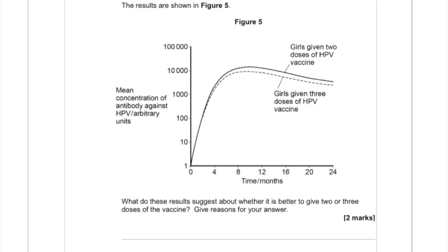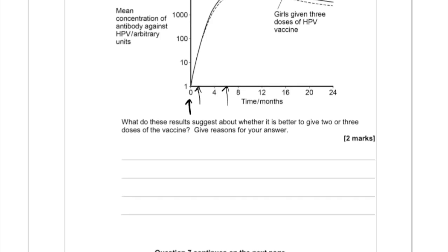The results are shown in a graph. Time is on the x-axis: zero is where they're given their first vaccination, one month is where the second dose is given for the three-dose group, and six months is where the third dose is given. The question asks: what do these results suggest about whether it's better to give two or three doses of the vaccine? Give reasons for your answer using the results in the graph.